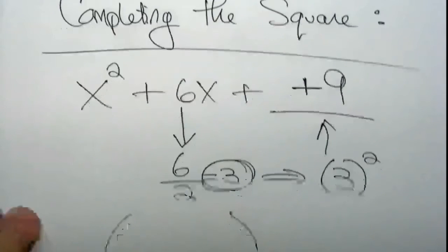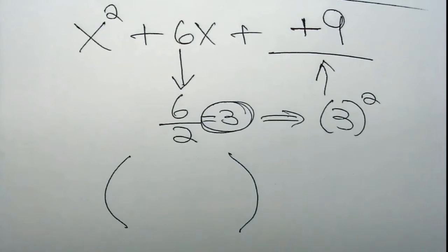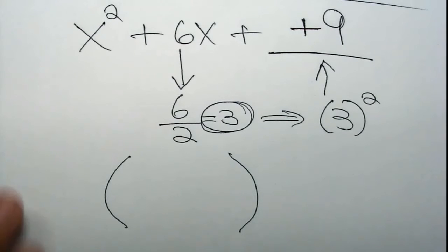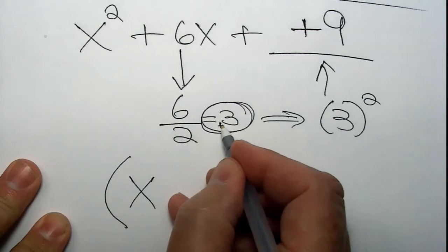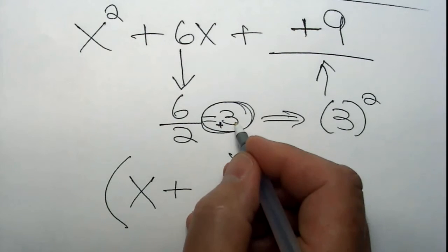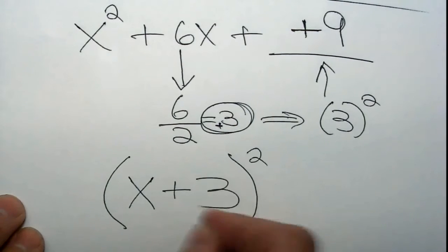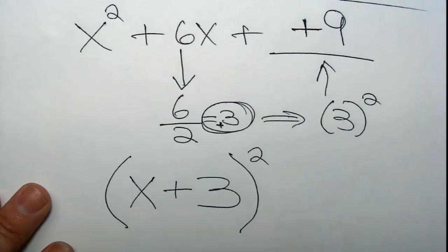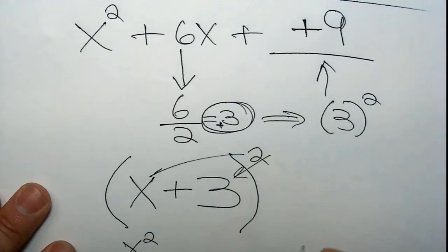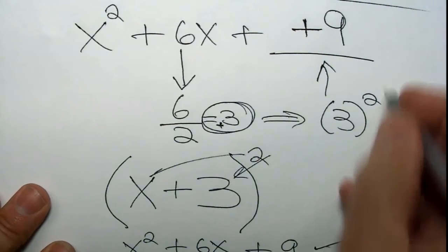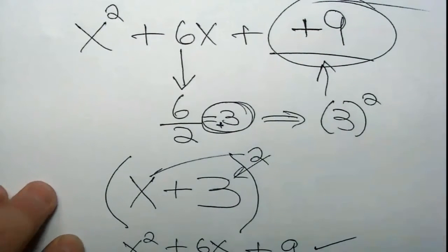Think about what binomial squared created that trinomial. Looking back at our pattern, they all had x's, they were all squared, and they were all plus or minus. In this case it's a positive 3, so the binomial is (x + 3). You can verify: square x gives x², square 3 gives 9, and one of each gives 2·3·x = 6x. That is the action of completing the square.